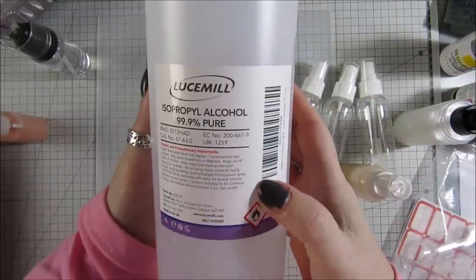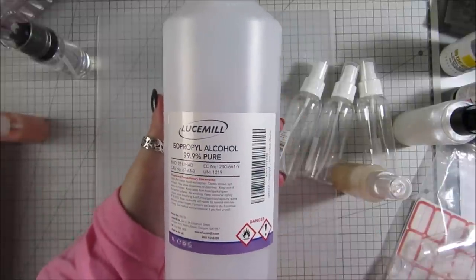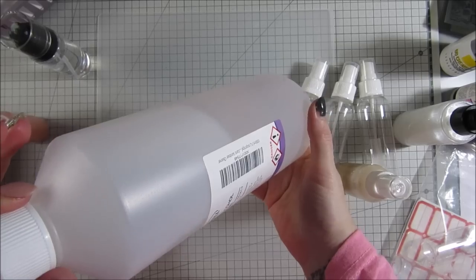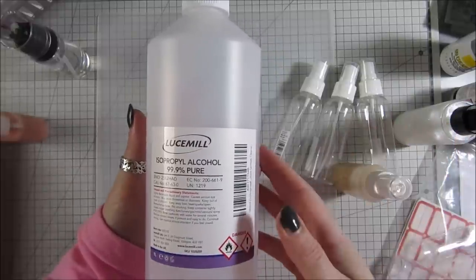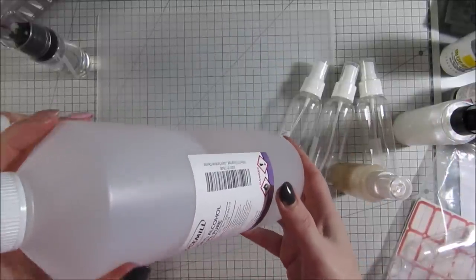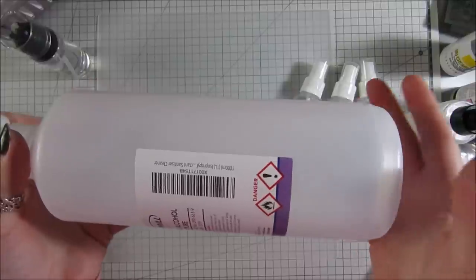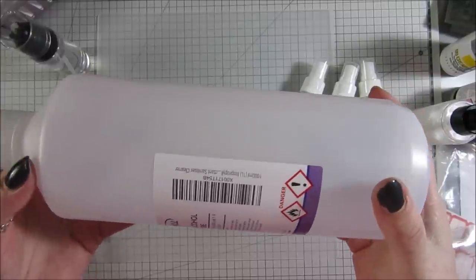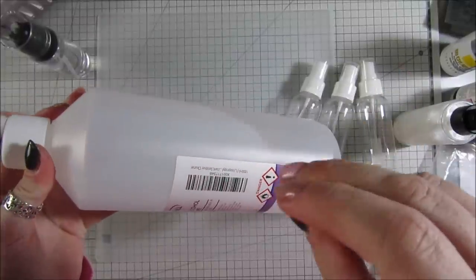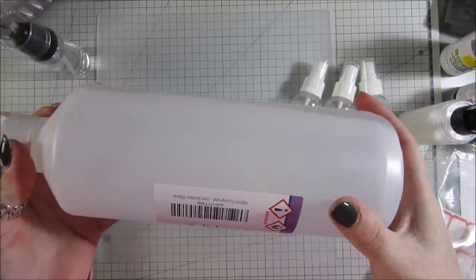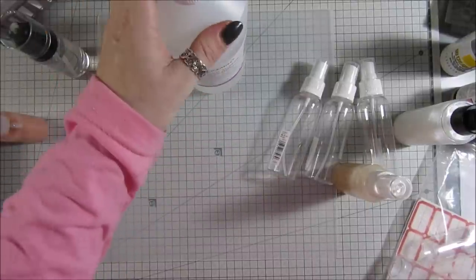What I use now is isopropyl alcohol. I get a big bottle from Amazon - I'll put the link for that. It lasts for so long, not only for your shimmer spray but you can also use it for cleaning the glue off your scissors. There's no smell and it doesn't wet your cardstock. If you just use water, your cardstock is going to be soaking and it ruins it. I use isopropyl alcohol.